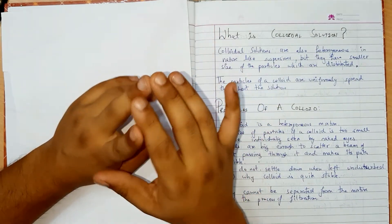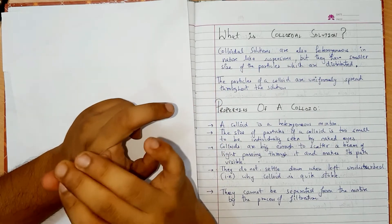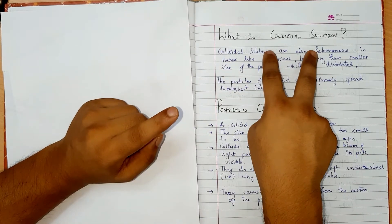Now we have done what we have done in this chapter. We have done the solute, we have done the suspension. Now the third type that is colloidal.